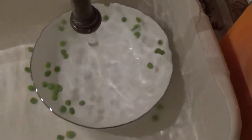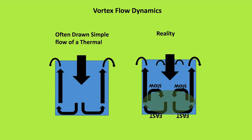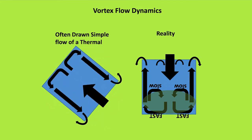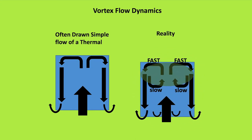Which is why there are no vortexes on the side of mountains. On the left, we have the often simple flow of a thermal as it was much earlier in episode one, and we see this kind of flow going on. The reality is this kind of flow on the right. If it's slow, it's a shallow vortex. If it's fast, it's a deeper vortex.